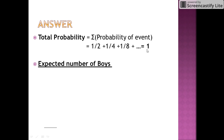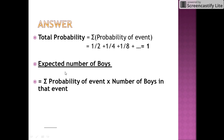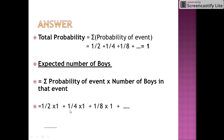Let us find the expected number of boys. The expected number of boys equals the sum of the probability of each event multiplied by the number of boys in that event. The first event has probability 1/2 and 1 boy, giving 1/2 × 1. The second event has probability 1/4 with 1 boy, giving 1/4 × 1, and so on. So we need the sum of 1/2 + 1/4 + 1/8 + ... to infinity.